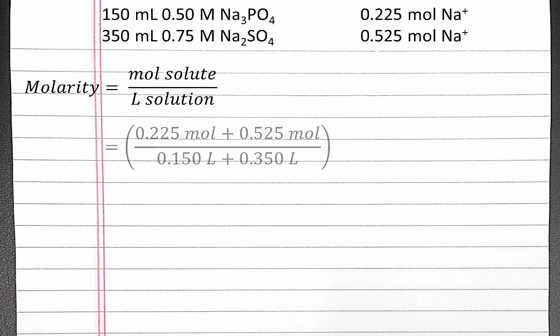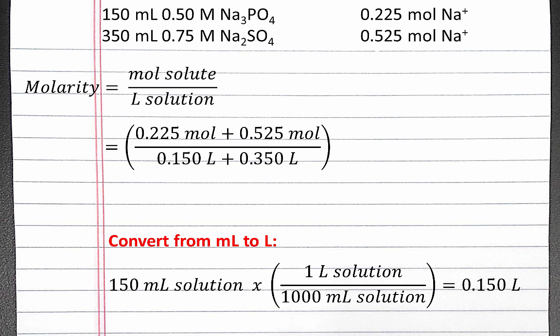Now we can find the total moles of sodium ions by adding together the sodium ions from both solutions, and the total liters of solution by adding together the two volumes of solutions. In this calculation, we've already converted our milliliters into liters using dimensional analysis, which is shown below.